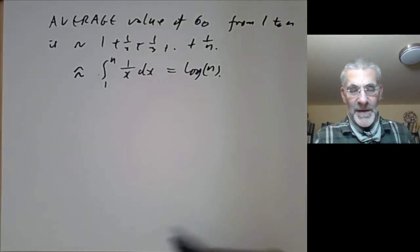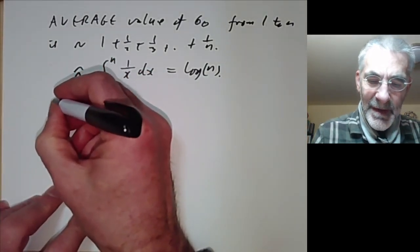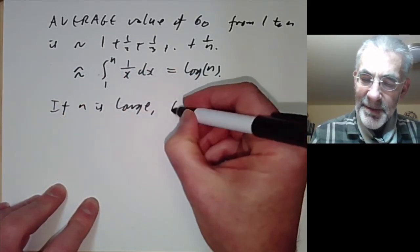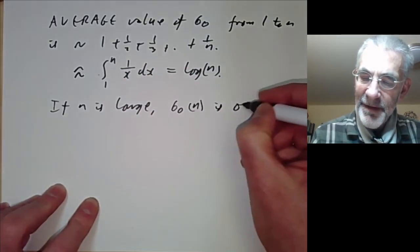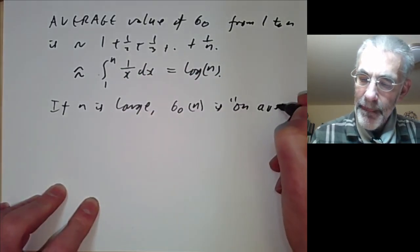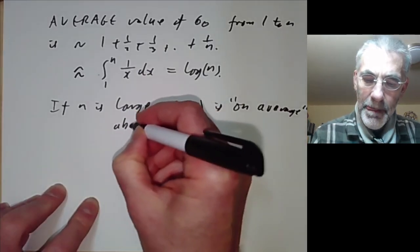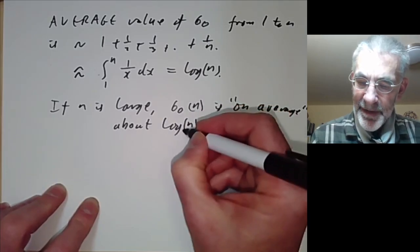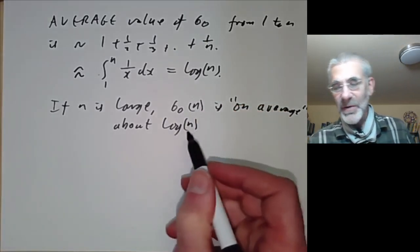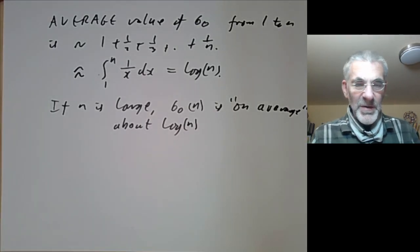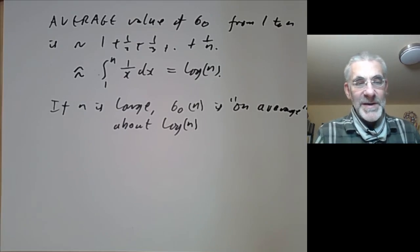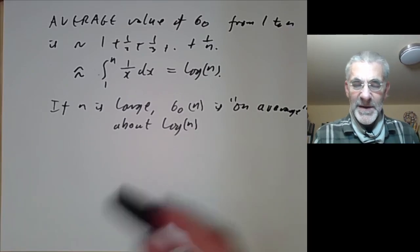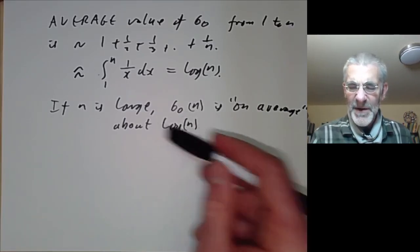So this suggests that if n is large, sigma_0(n) is on average about log(n). In other words, a large number is expected to have about log(n) factors on average, though it varies — numbers that are products of many small primes can have many more divisors, while primes have only 2.